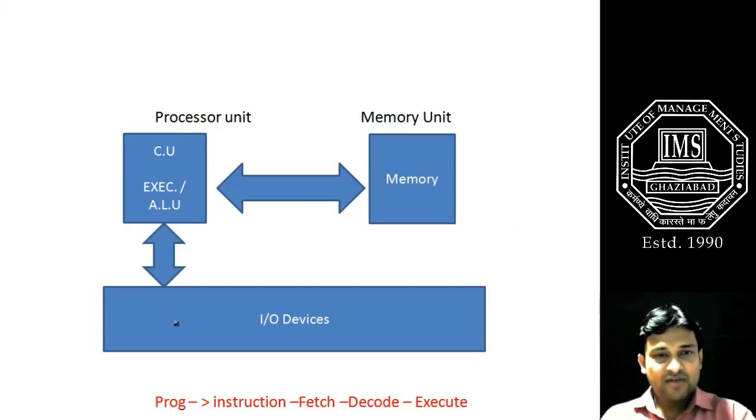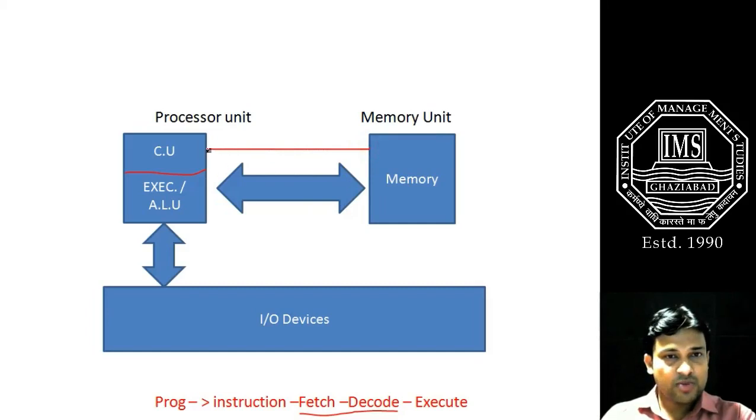When we have entered the data from input devices, then from the memory section, it's the primary responsibility of the CU, the control unit, to fetch and decode that data. We can view this processor into two parts: CU and ALU, or the execution unit. Data from memory is fetched by the control unit, and after fetching it decodes that instruction.